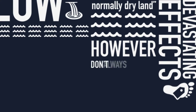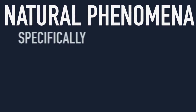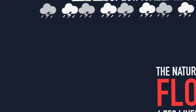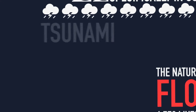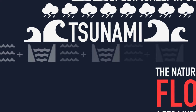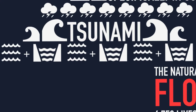However, floods don't always occur due to excess rainfall. Sometimes floods occur as a result of natural phenomena, specifically in coastal regions, where flooding can occur as a result of storm surges from tropical cyclones, a tsunami, or even a high tide occurring at the same time as higher than usual river levels.